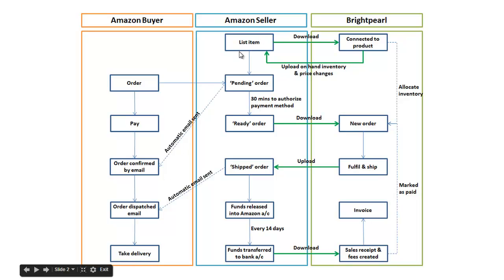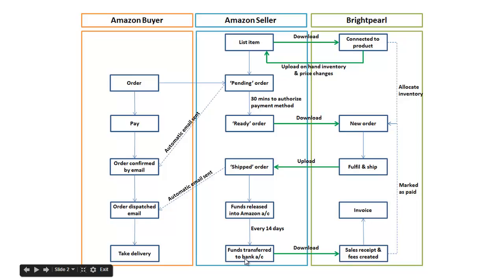For you, the process starts by listing items on Amazon. Once they're listed and the customer buys them, you get a pending order. That order only becomes ready when the payment has been authorised. You then fulfil and ship it, and that becomes a shipped order in Amazon. Amazon releases the funds and then about two weeks later those funds are transferred into your bank account.